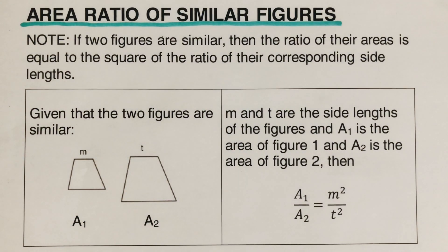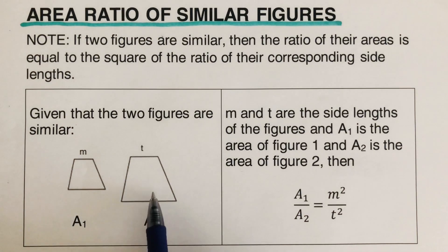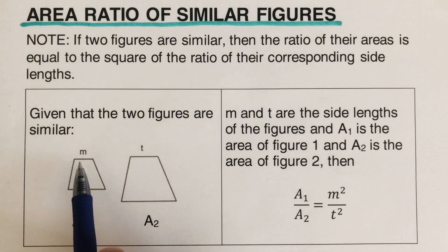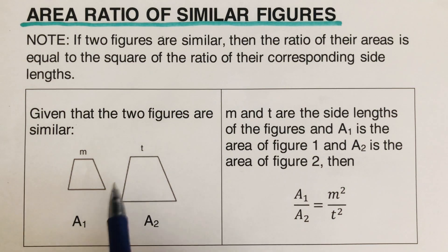This is pretty much similar to the other video that talks about the perimeter ratio of similar figures — I will put the link in the description box below. The only difference is that we have the area of the first picture and the area of the second picture, with side length M and side length T. If these two figures are similar, this formula will work.